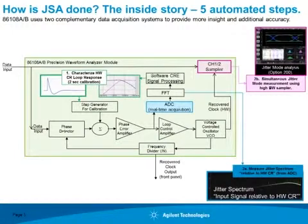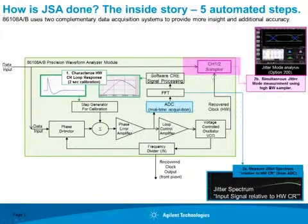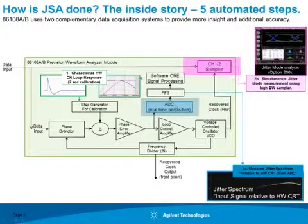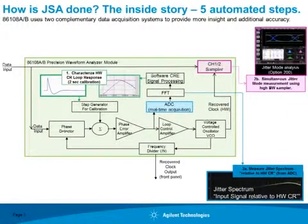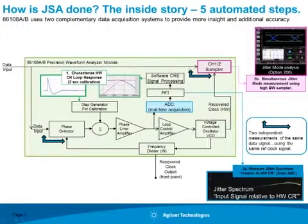Next, a jitter mode measurement is performed. The classic jitter mode measurement is made using the reference clock from the recovered signal coming into the sampler while we analyze the incoming data. At the same time, there's a 12-bit ADC making a measurement on the error signal in the clock recovery loop. We digitize that signal and process it to look at the low-frequency jitter. It's important to note that the reference clock and data being analyzed are the same for both the traditional 50 GHz sampler and the ADC path — we're measuring the same thing using two different acquisition systems.